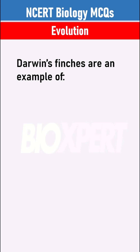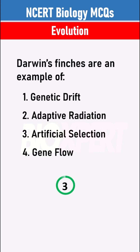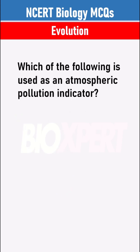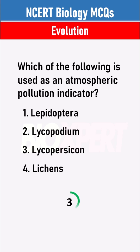Darwin's finches are an example of Adaptive Radiation. Which of the following is used as an atmospheric pollution indicator? Lichens.